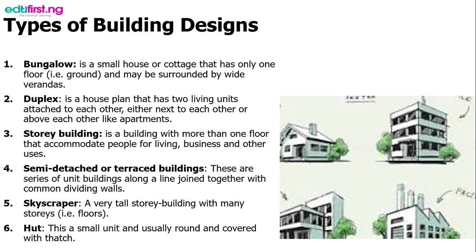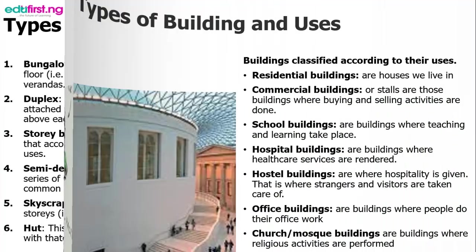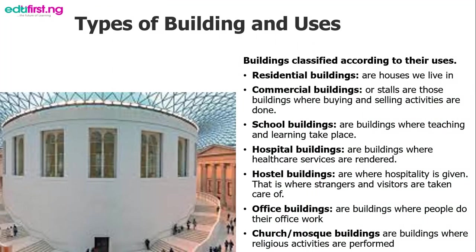From there we move on to buildings classified according to their uses. First, we have residential buildings — these are buildings like houses where we live. Second, commercial buildings or stalls — these are buildings where buying and selling activity is done. Third, school buildings — these are buildings where teaching and learning takes place, just like in our current school. We also have hospital buildings, where health services are rendered, and hostel buildings, just like we have in our school, where hospitality is given.